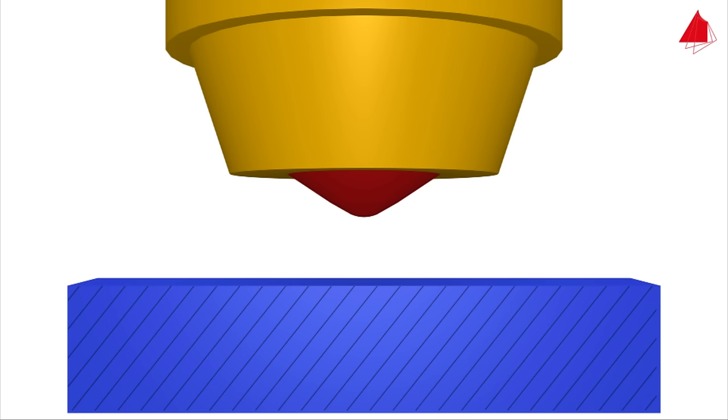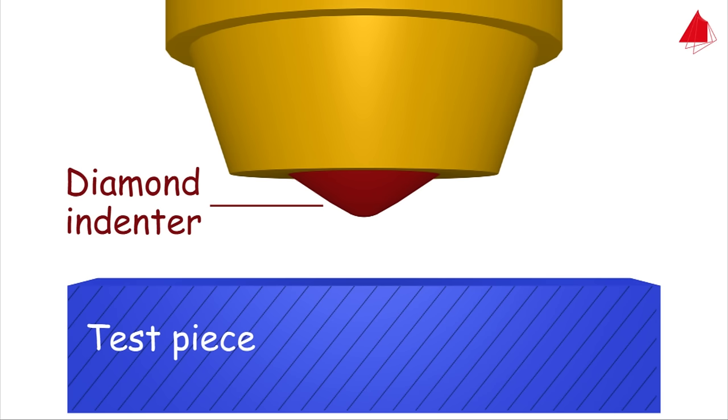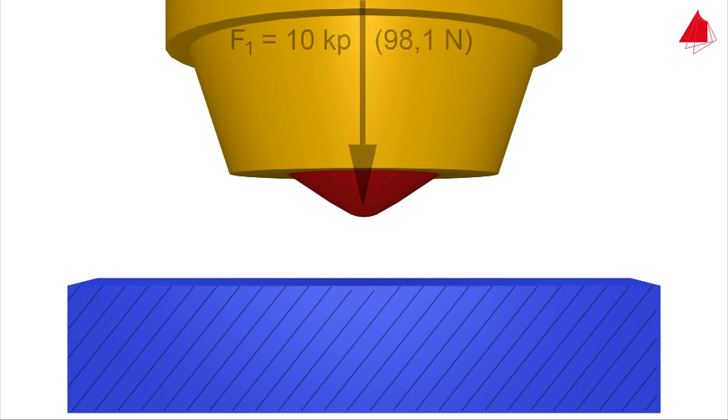In the process variant scale C, a rounded cone made of diamond is used as an indenter. In step 1, the diamond cone is pressed onto the test piece surface with a minor force of 10 kiloponds. The depth of indentation under this preliminary load is the reference point.